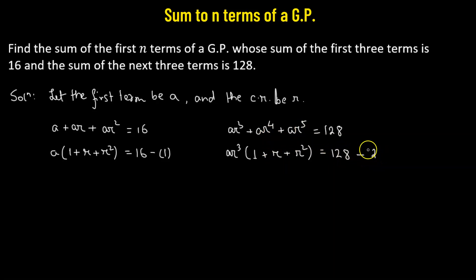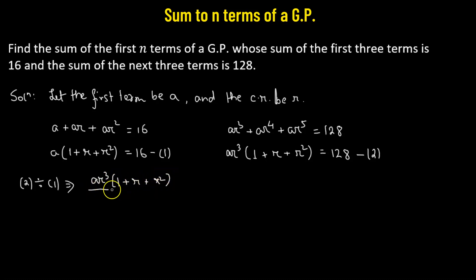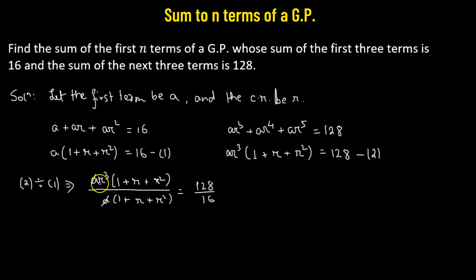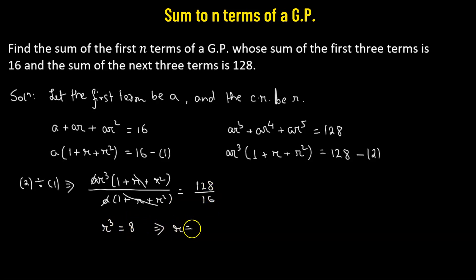Now we divide equation number 2 by equation number 1. This gives us AR³ × (1 + R + R²) all divided by A × (1 + R + R²), equals 128 divided by 16. Here A and A cancel out, and (1 + R + R²) cancels from numerator and denominator, leaving R³ = 8. Taking the positive cube root, R = 2.